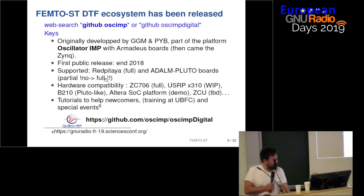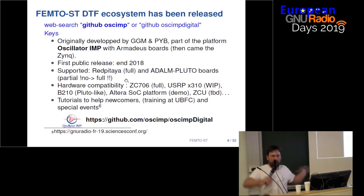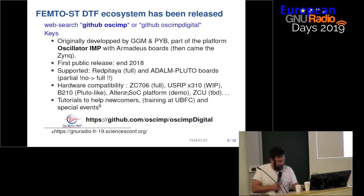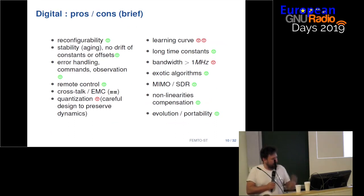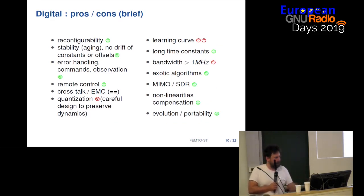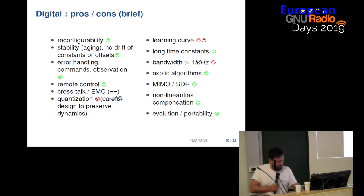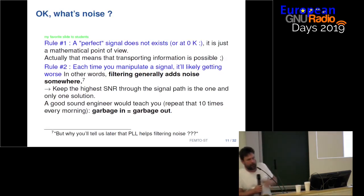Hardware compatibility is also correct with the ZC706 — the big Zynq — and the USRP X310, though it's almost a dead end with the USRP X310. Just to show you: digital is not always the right solution, so you have to be very careful in choosing. The learning curve is discouraging for many people. There is a problem with the locking bandwidth if you want to make locks, and the main problem is also quantization noise, so you have to carefully design your system.